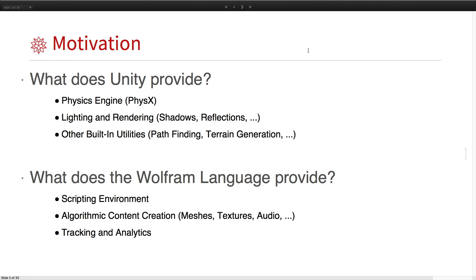So, motivation. What does Unity provide to Wolfram language users? It provides a powerful physics engine called PhysX, really nice lighting and rendering including shadows and reflections, and other built-in utilities such as pathfinding and terrain generation.